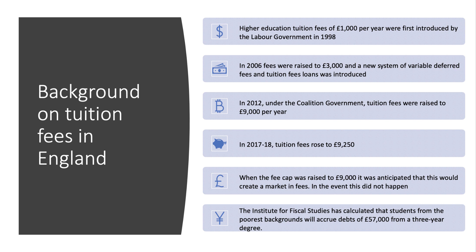Most competition now seems to be by conditional and unconditional offers. The Institute for Fiscal Studies (IFS) has recently calculated that students from modest financial backgrounds — the poorest families — will typically accrue a debt of over £57,000 from a three-year degree course. That's not just tuition fees; living costs have to be factored in as well, in particular the high cost of student rented accommodation.